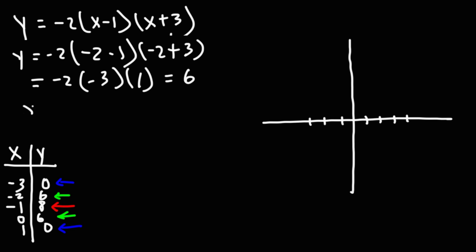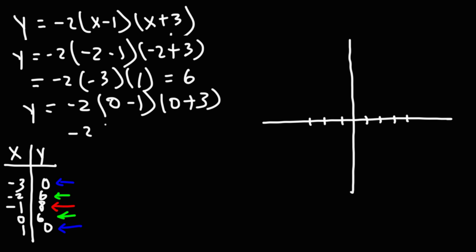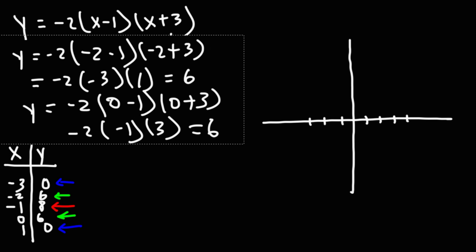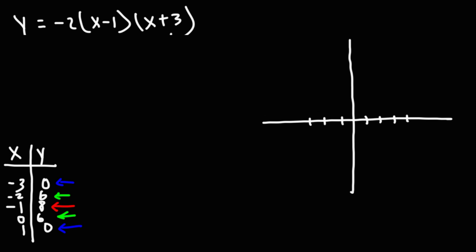Let's confirm by replacing x with 0 to get the y-intercept: negative 2 times negative 1 is 2, times 3 gives us positive 6. As we can see, it's the same due to the symmetry of a parabola.